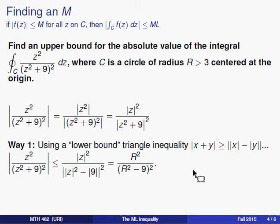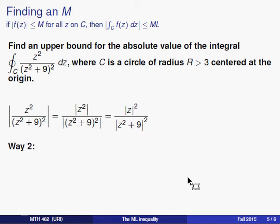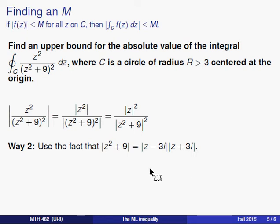Now, this isn't the only way you can come up with a bound on the function values, on the modulus function value. Another way we could have gone is this way, and this is a way that the worksheet actually suggests that you follow. You can rewrite z squared plus 9 as z minus 3i times z plus 3i, and if you do that factoring, we can attach the absolute value or modulus bars onto both factors in a product like that.